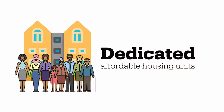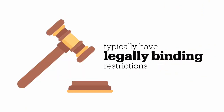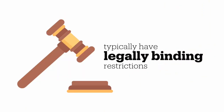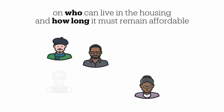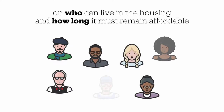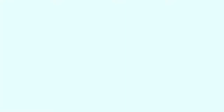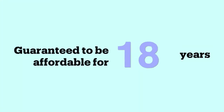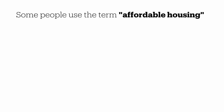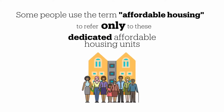Dedicated affordable housing units typically have legally binding restrictions on who can live in the housing and how long it must remain affordable to a specific income group. These units may continue to serve lower-income households for as long as 30 or 50 years or more. Some people use the term affordable housing to refer only to these dedicated affordable housing units.